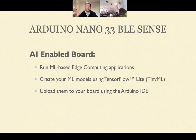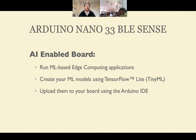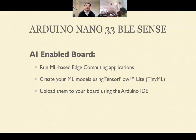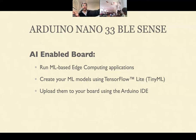The Arduino Nano 33 BLE Sense can run machine learning-based edge computing applications. In any situation where you need intelligence at the edge — like the pressurized gas pipeline example — or wildlife tracking, where they used this Arduino to track movements of wild elephants in remote locations, you can make a basic machine learning model using TensorFlow Lite, embed it inside the device, and leave it in remote locations.